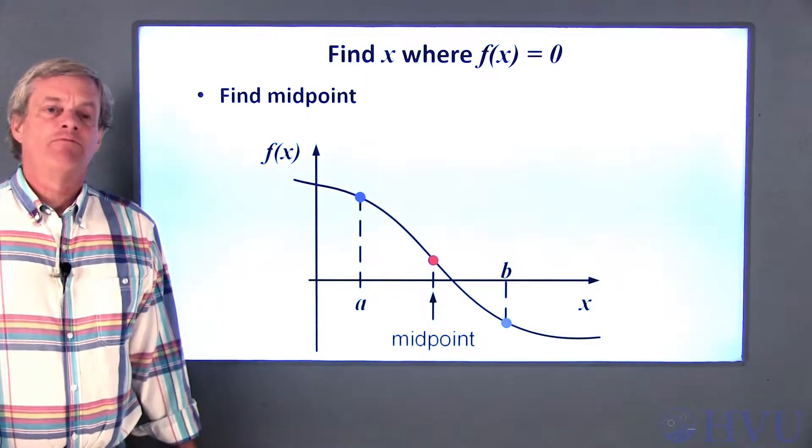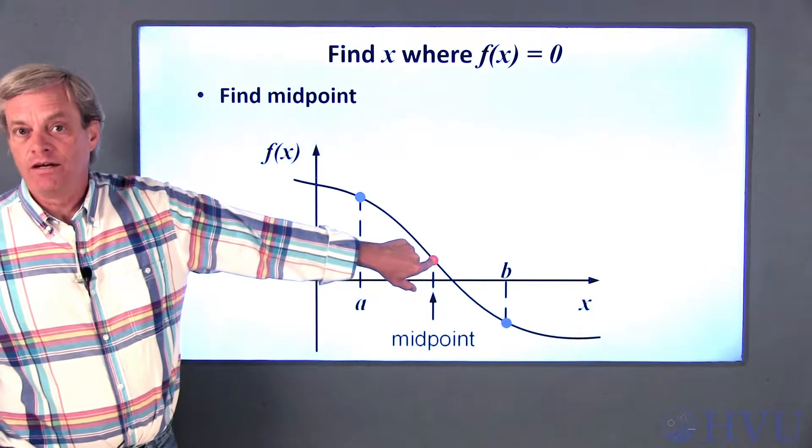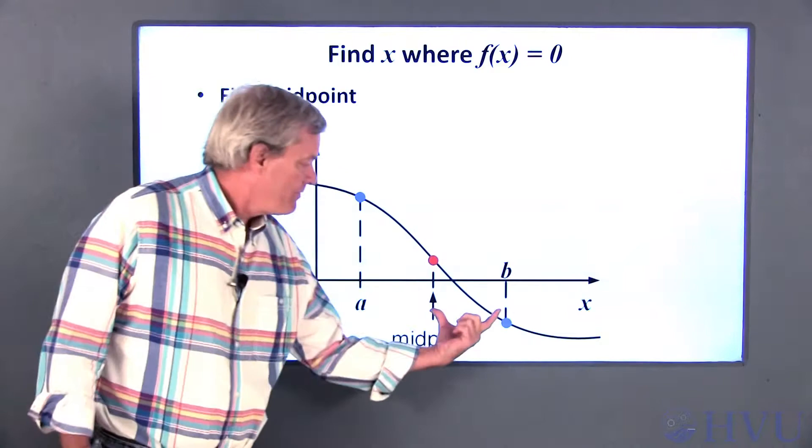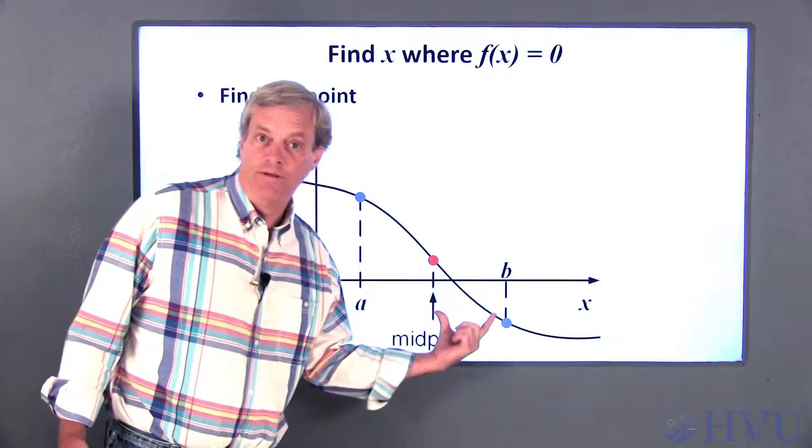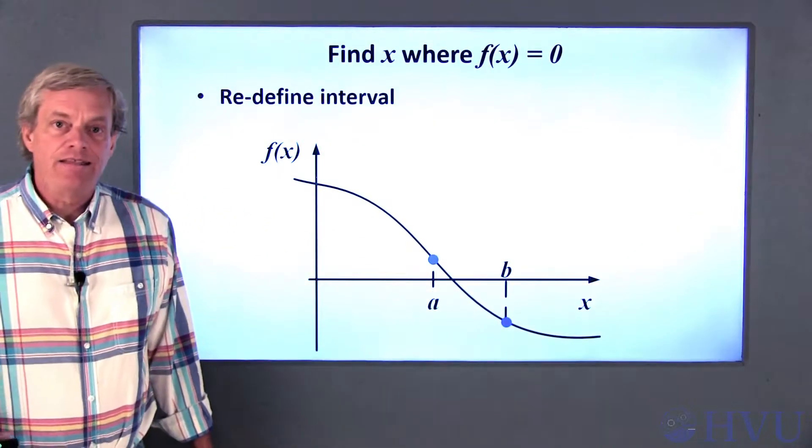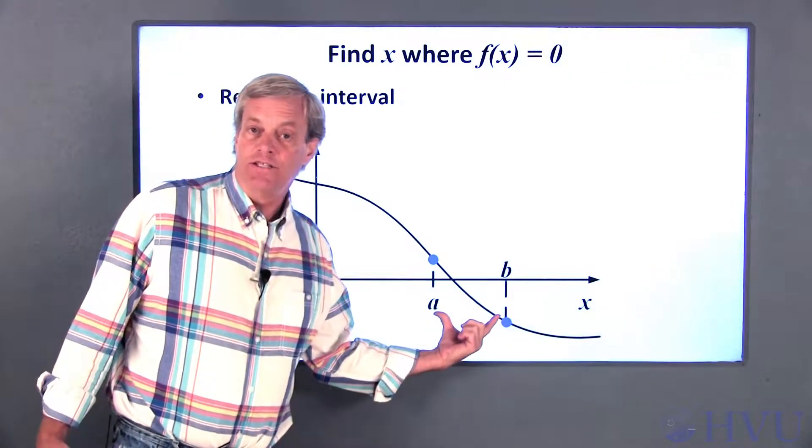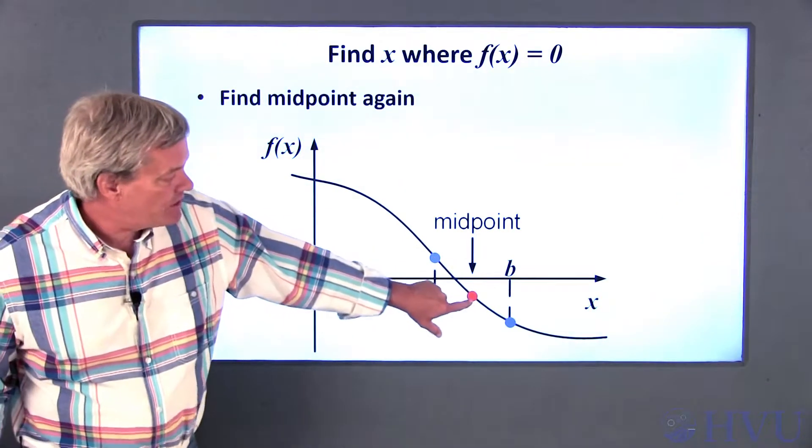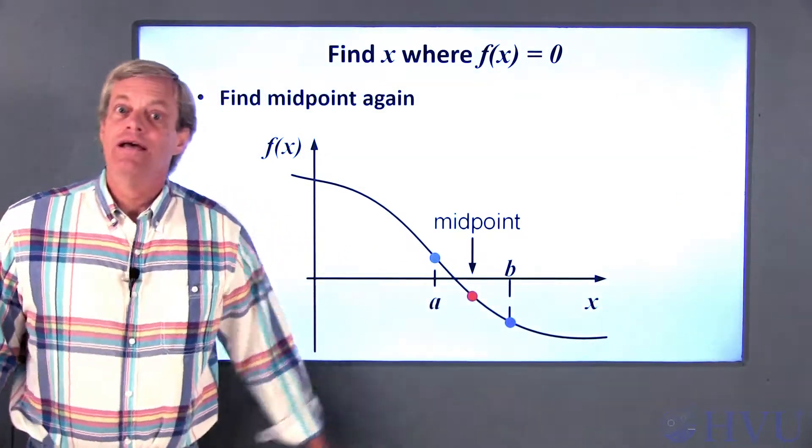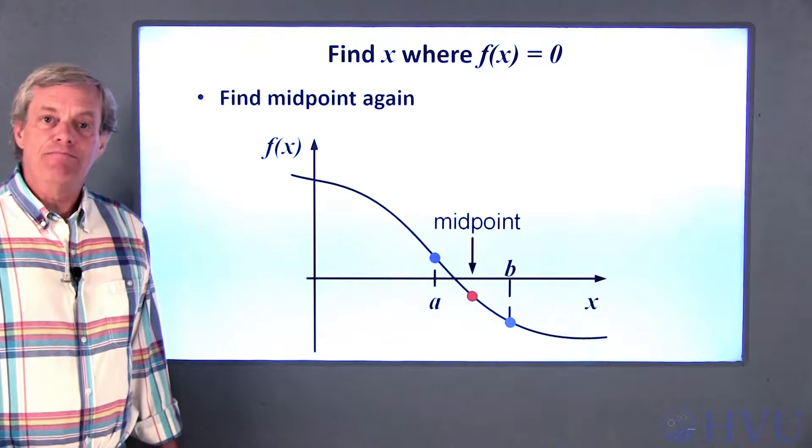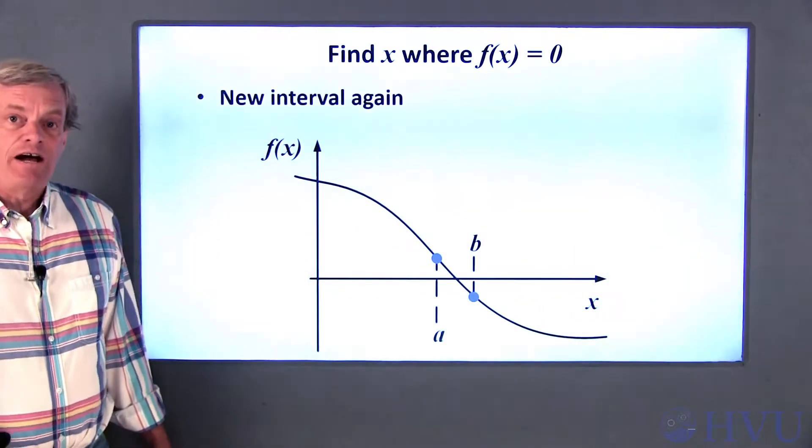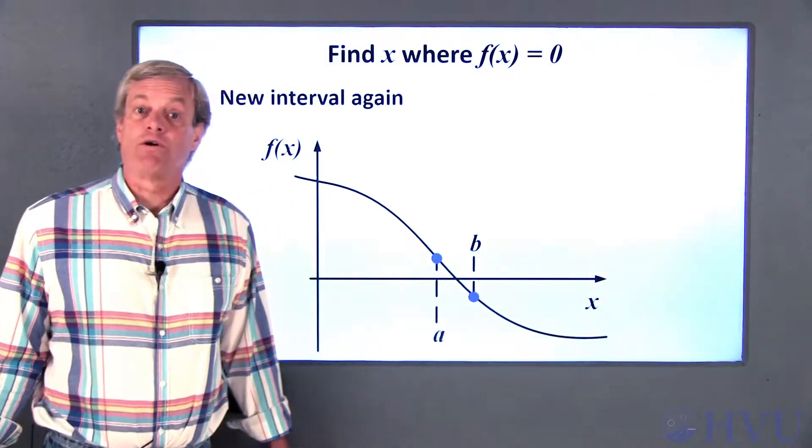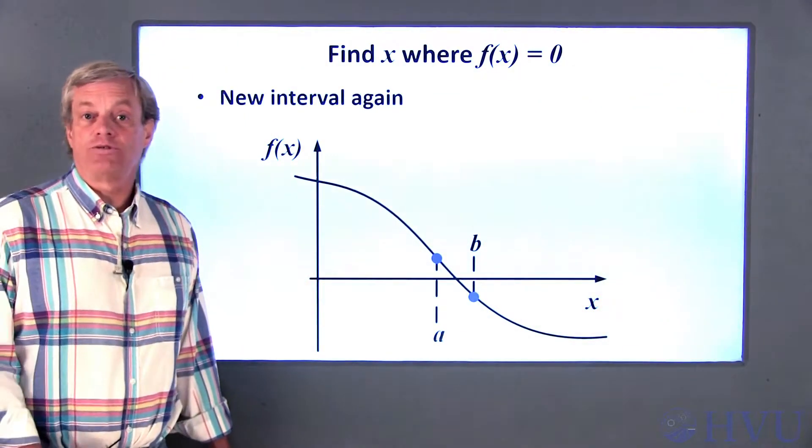Next we'll find the value of the function at the midpoint of the interval and determine which side of the midpoint the sign changes on. In this example, the sign changes in this interval. Then we redefine the interval to be on the side of the midpoint where the sign change occurs. Now we start repeating the process by finding the value of the function at the midpoint of the new interval and checking to see which side of that midpoint the solution is on. Then we can redefine the interval again and keep cutting our interval in half until the interval is so small that we are guaranteed to be close enough to the actual solution.